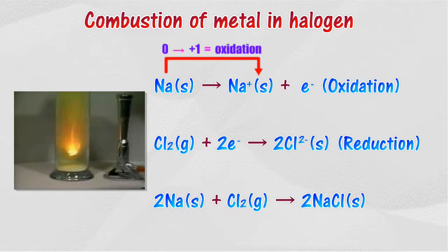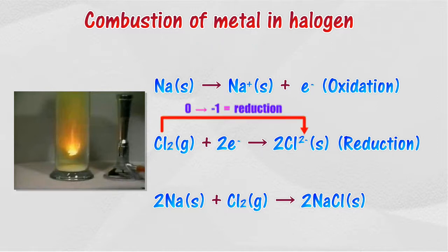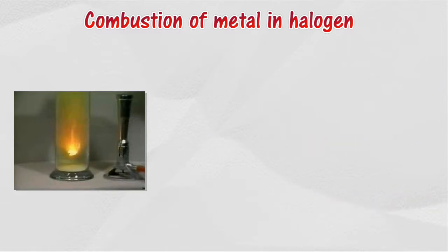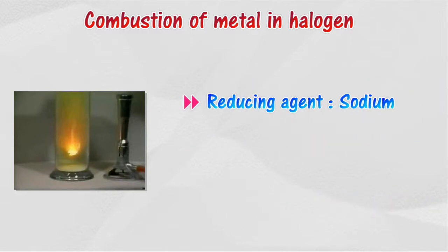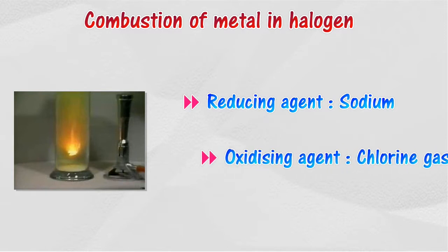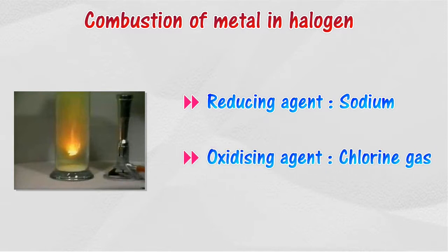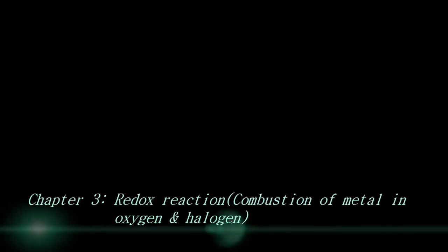Sodium releases electrons to form sodium ion. Electrons transfer from the sodium atom to the chlorine atom, and the chlorine atom receives electrons to form chloride ion. In this redox reaction, sodium reduces chlorine to chloride ion, therefore sodium acts as a reducing agent. Chlorine oxidizes sodium to sodium ion, therefore chlorine gas acts as an oxidizing agent.